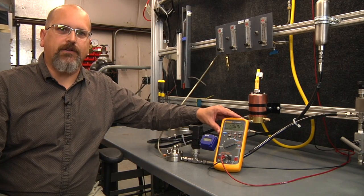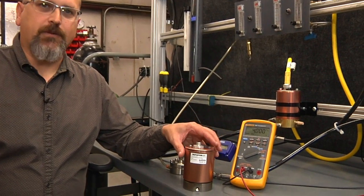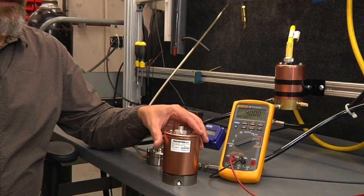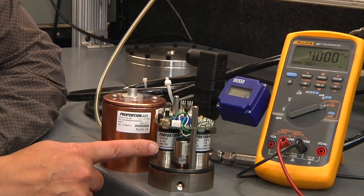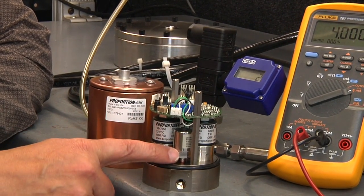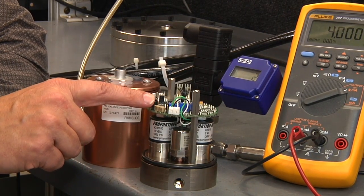The Proportion Air GX Series is a complete electronic pressure regulator. It consists of two solenoid valves, an electronic pressure sensor, and a sophisticated control circuit.